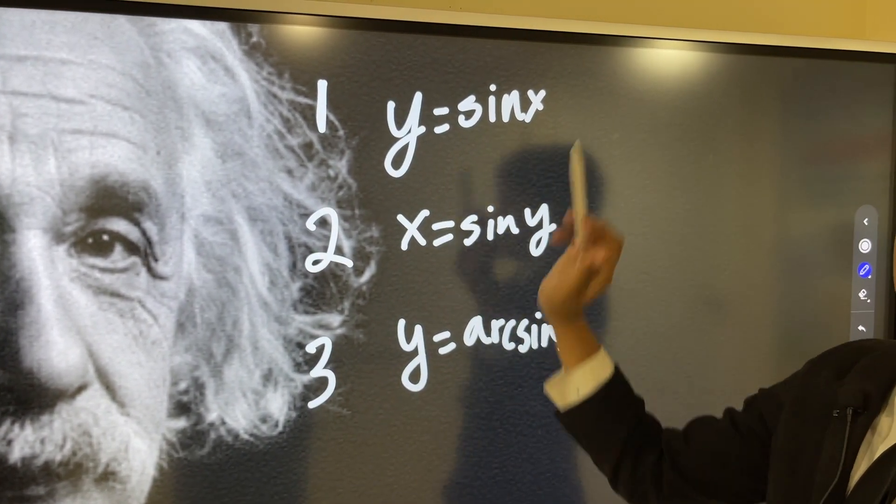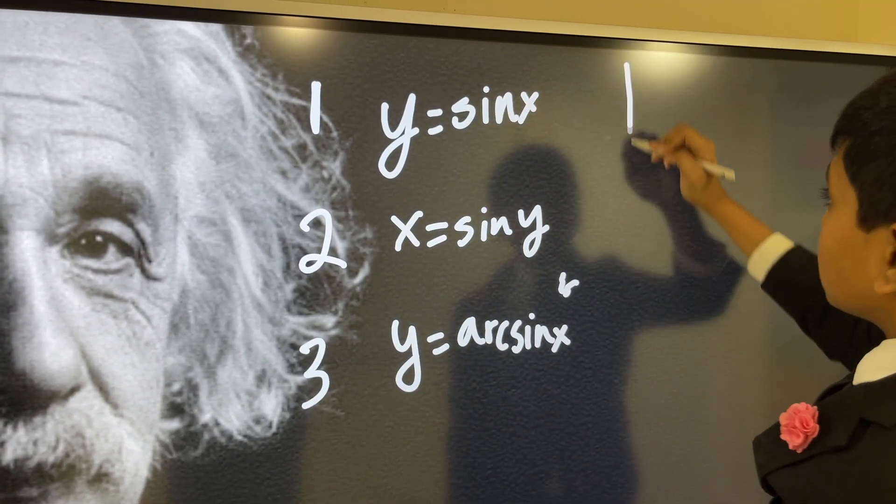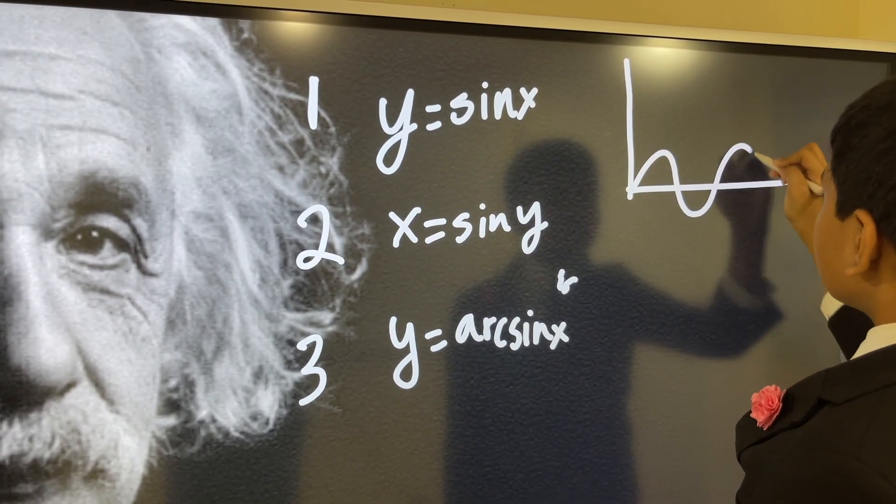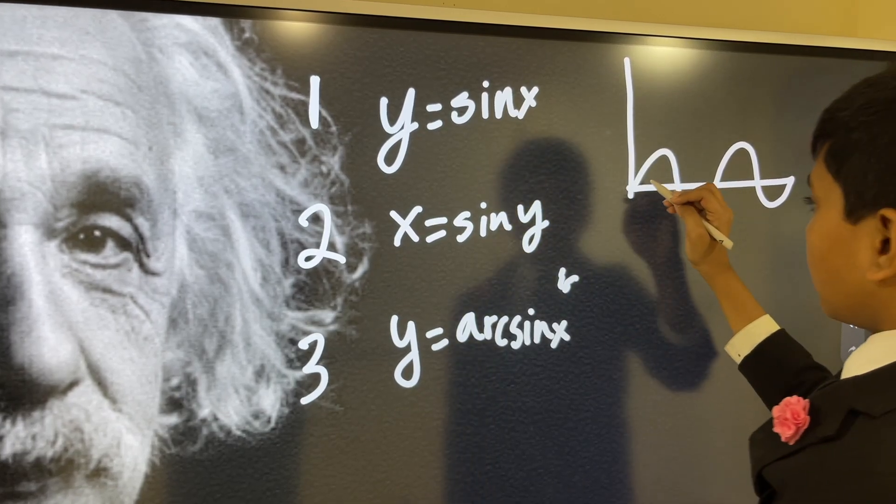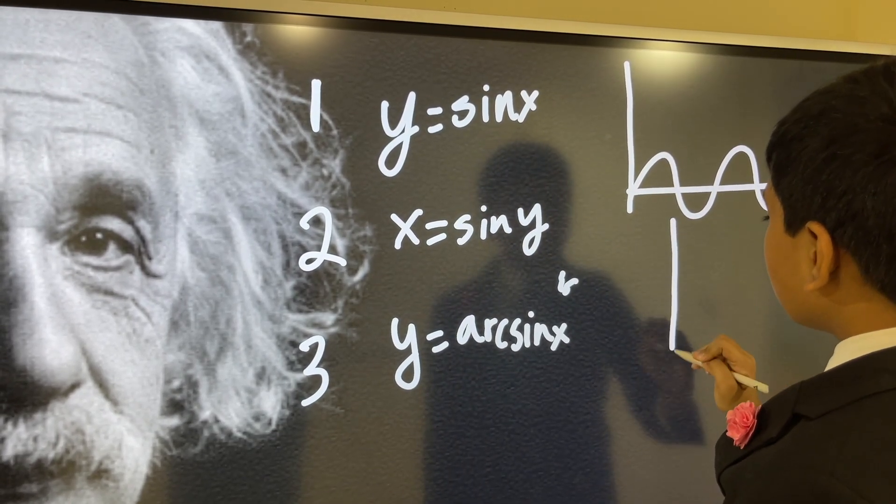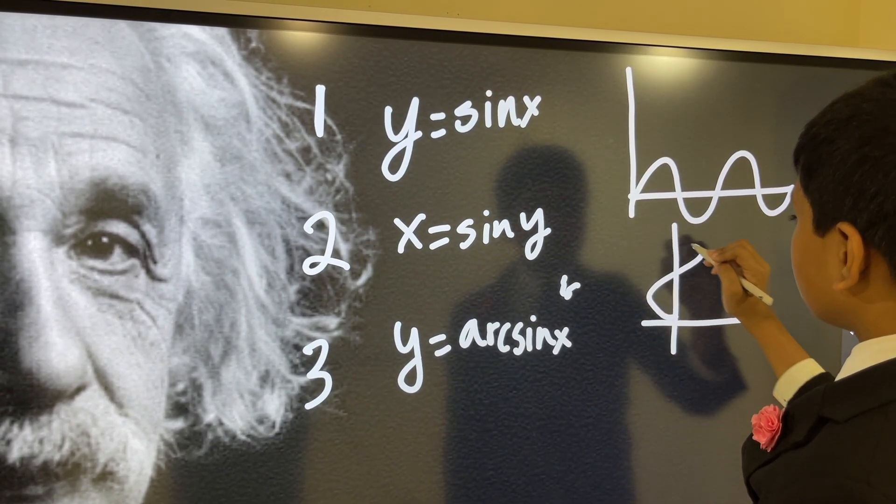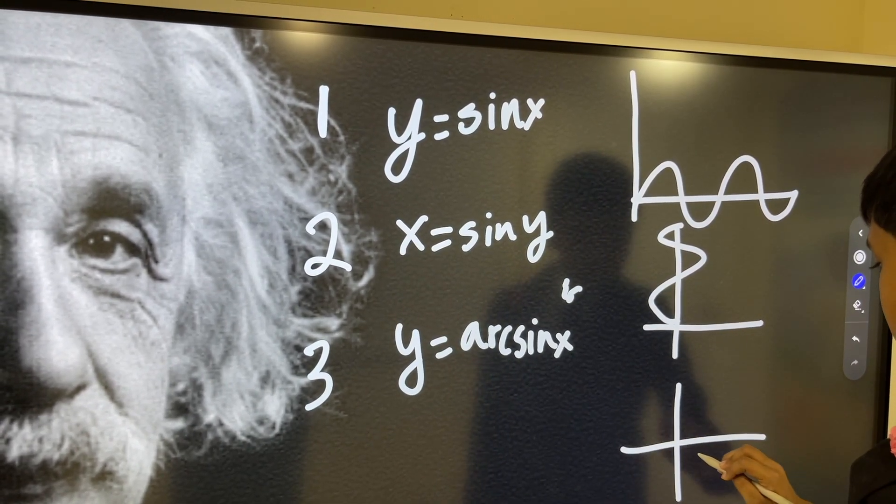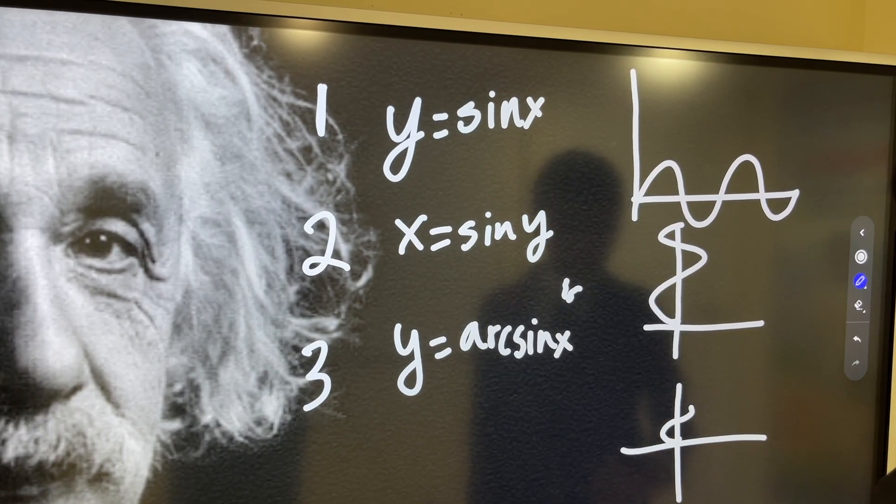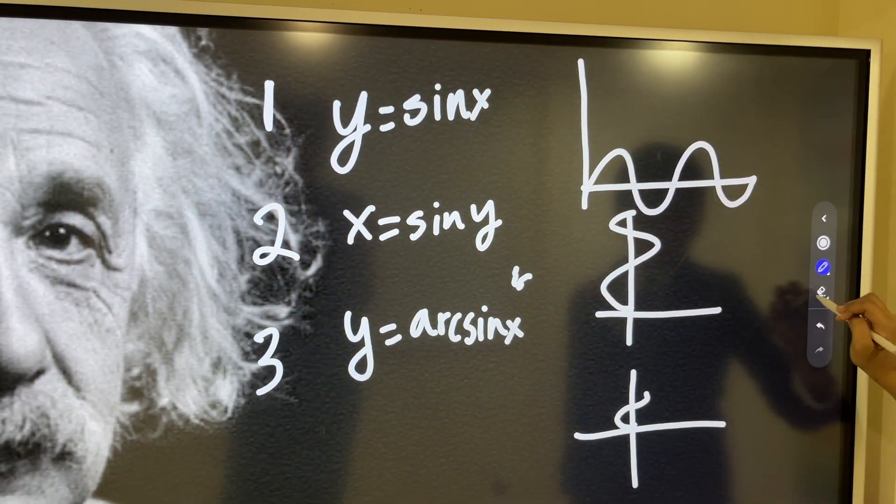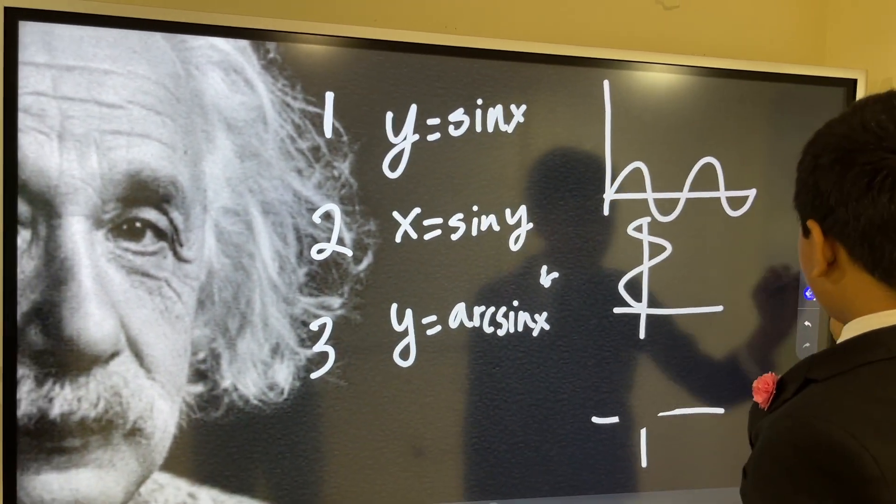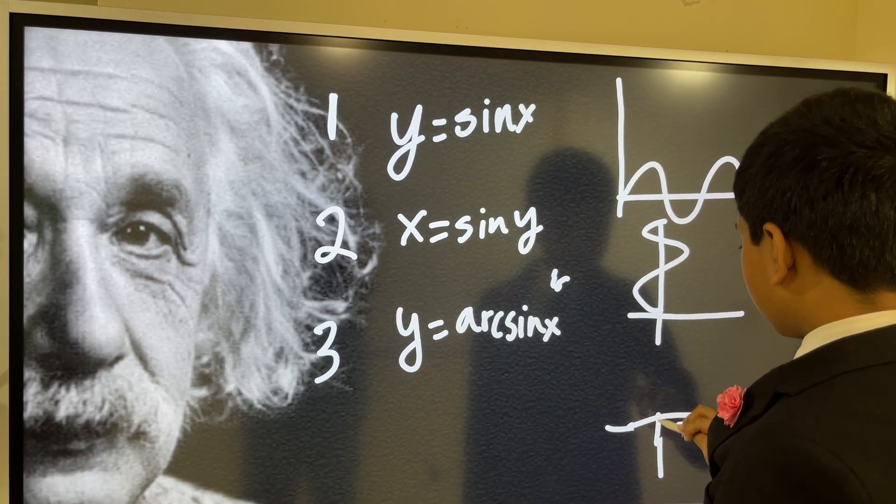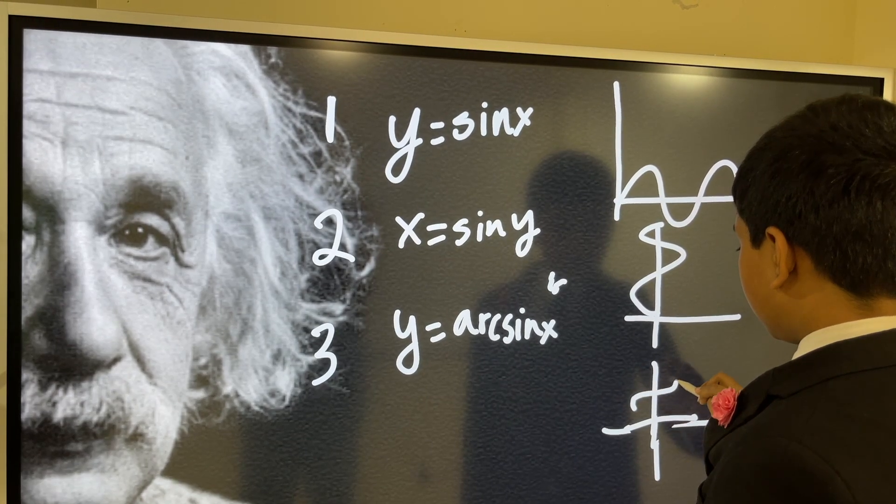This is the bottom one, this is the middle, this is the top. So, y equals sine x looks like this. x equals sine y looks like this. y equals arc sine x looks something like this. Let's draw that. It looks something like this.